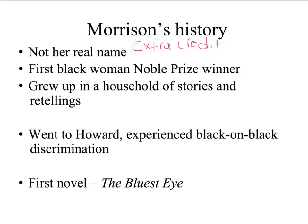Toni Morrison has the very prestigious honor of being the first black woman to win the Nobel Prize. That's a prize given for lifetime achievement. There are Nobel Prizes in science, chemistry, medicine, literature, economics, and all kinds of other things. Toni Morrison won the Nobel Prize for literature in 1993 — still within most of our lifetimes, a very important thing. It gives us an idea of the level of writing that Toni Morrison does.